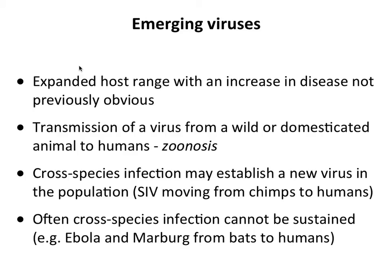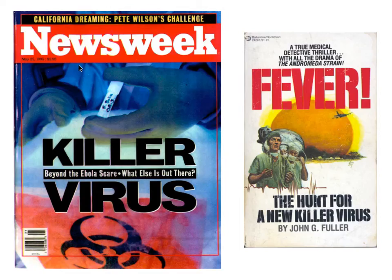Cross-species infection can establish a virus. SIV to HIV is a great example — a zoonotic infection that became a human infection. The transfer of SIV from chimps in the early 1900s to humans, then propagation in people. Sometimes these cross-species infections don't go anywhere. Ebola and Marburg we believe go from bats to humans, but they do not establish human-to-human transmission. So every Ebola or Marburg outbreak is a brand new transmission from bats to people.